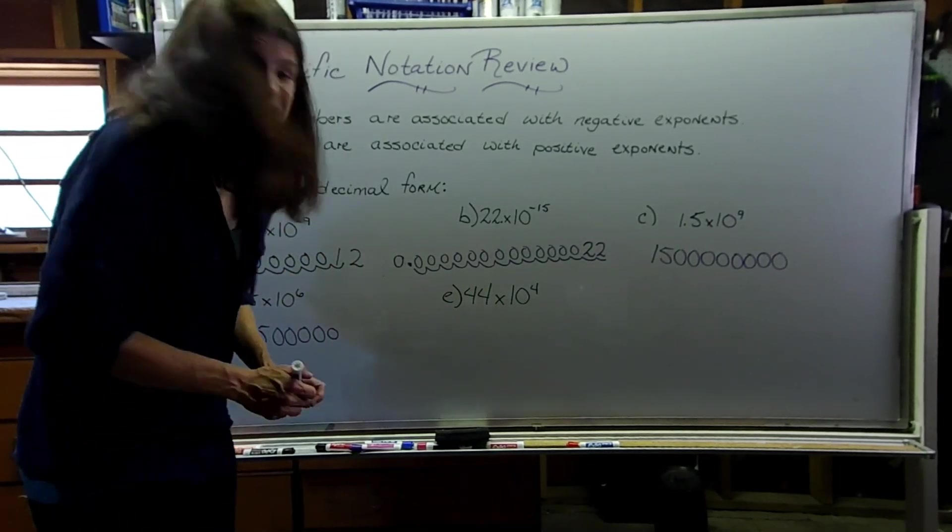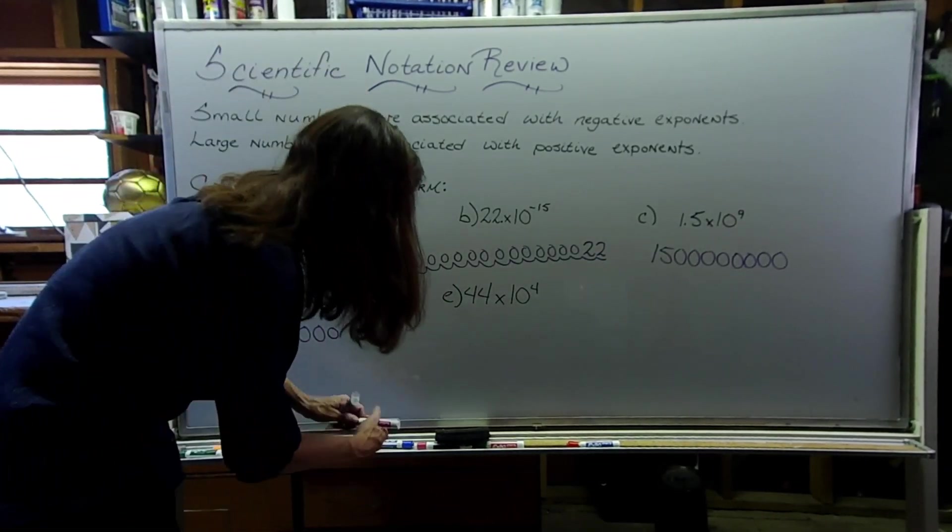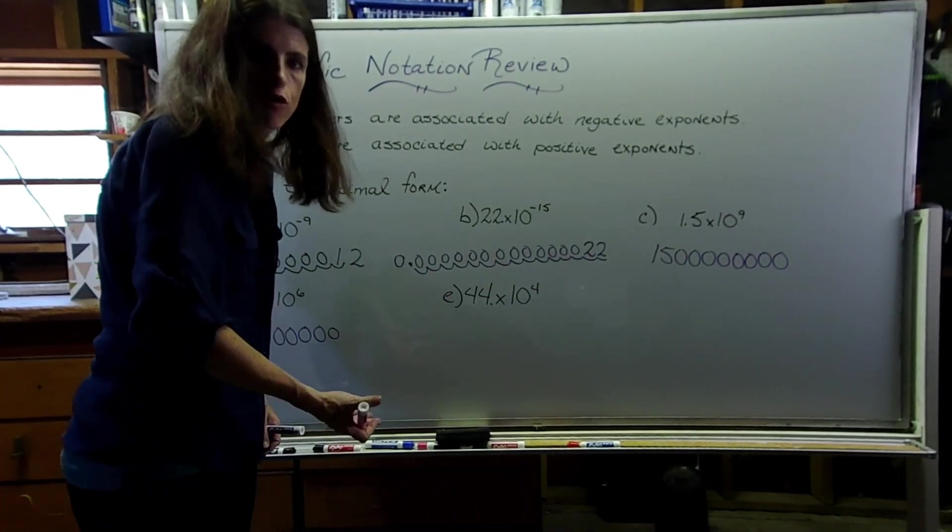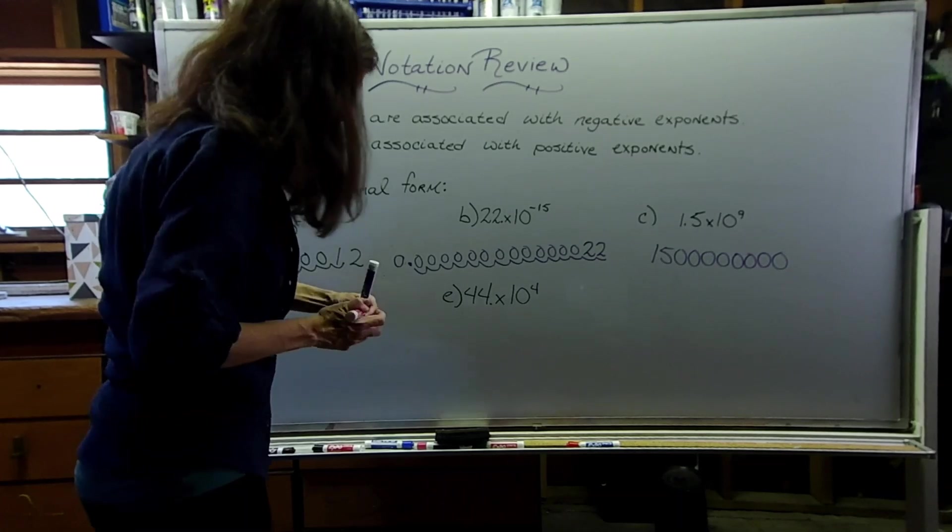This is another one where we're not seeing the decimal point at first. So we know the decimal point is there, which means, since it's all the way to the right already, we're just going to add 4 zeros to that number.